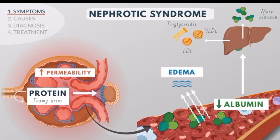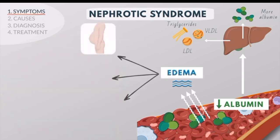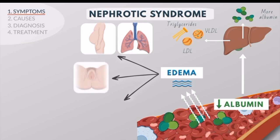Decreased albumin in the blood also causes edema and fluid accumulation under the tissue. This causes the kidney to compensate by retaining more water and sodium. Ascites and pleural effusion may result from fluid accumulation in the abdominal cavity or pleural cavity in the lung. Swelling of the labia or scrotum can also occur, and most often the fluid causes tissue swelling.